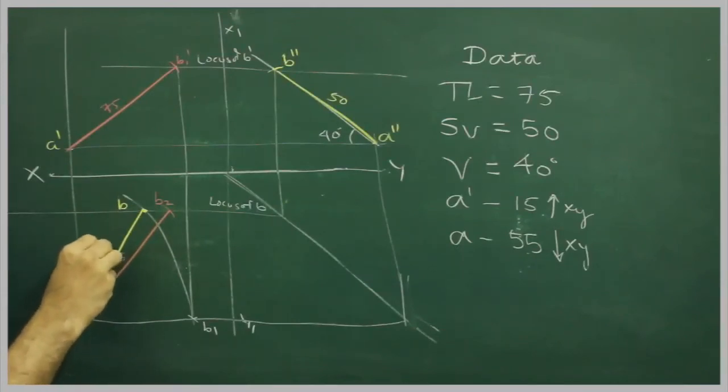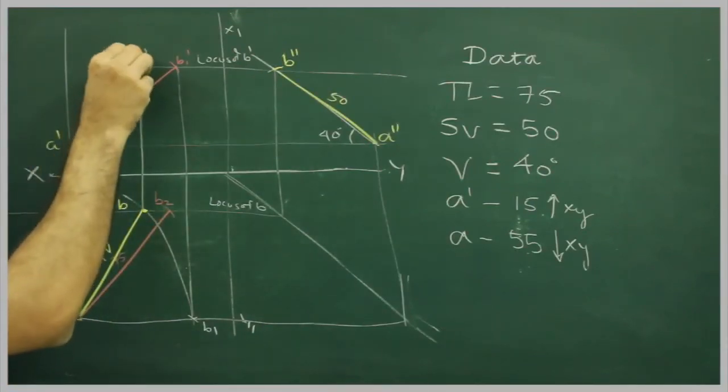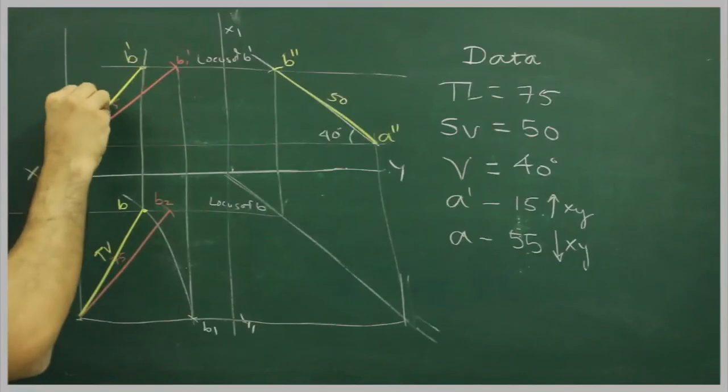So this is your top view. Project this point straight up, wherever it will cut, that is B dash.